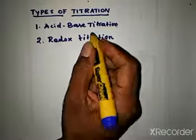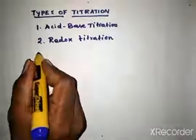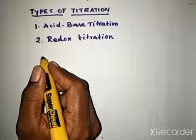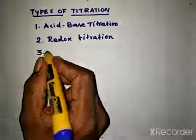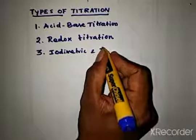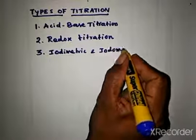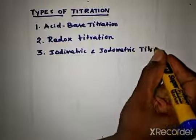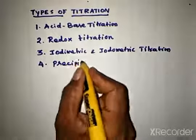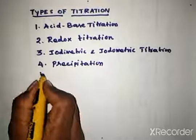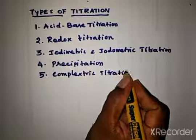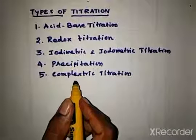Redox titration, also called oxidation-reduction titration, includes permanganometric titration, iodometric and iodimetric titrations. The fourth type is precipitation titration.